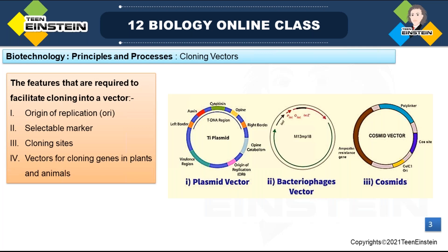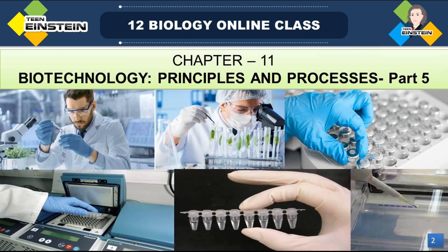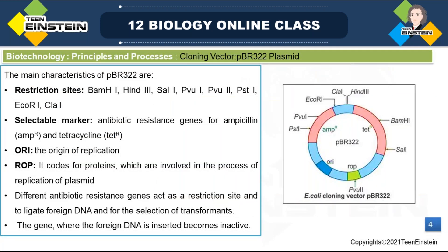Vectors for cloning genes in plants and animals — examples include cosmids, plasmid vectors, and bacteriophage vectors. We should have selected vectors for cloning plant genes and animal genes. Up to this, we have learned all these features. Next comes PBR 322.